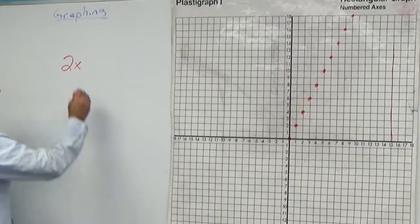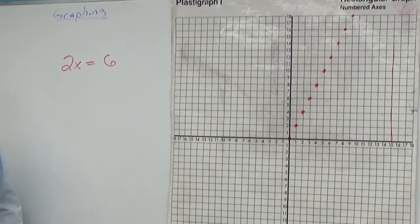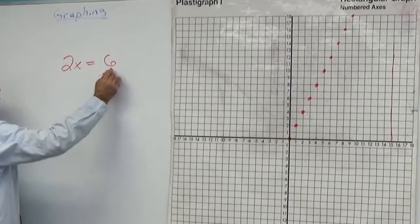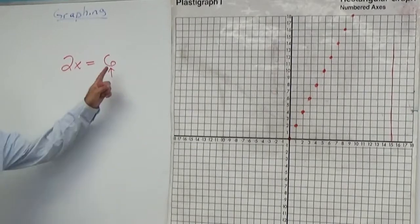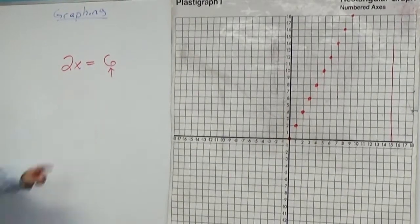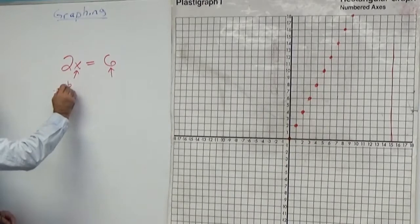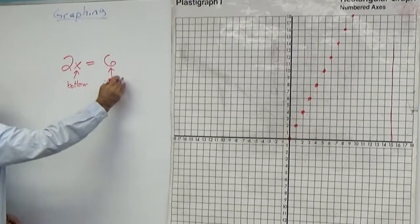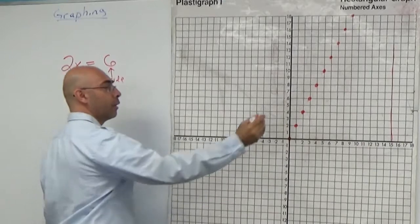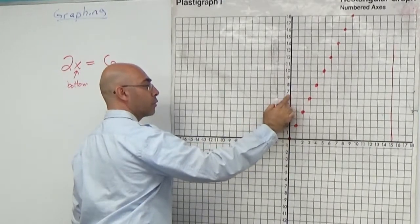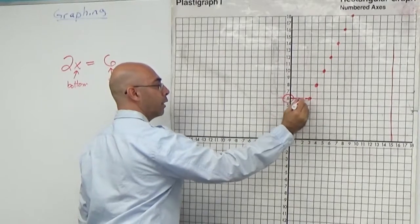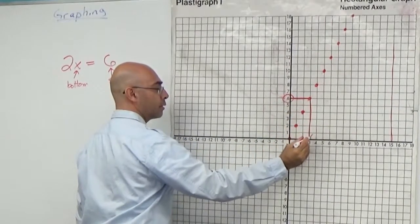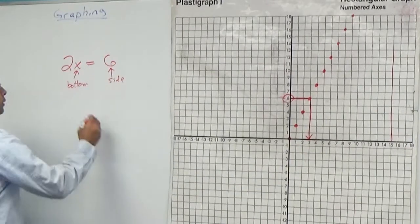Now if I said 2x equals six, that means start, which six should I look at? The side. The side. Remember, this is the side one. This is the bottom one. So x is the bottom. That's the side. So I go to six right here. Let's draw a circle. I go across the line, and then where do I go when I hit there? Down. So what is x equal to? Three. So I could just say x equals three.